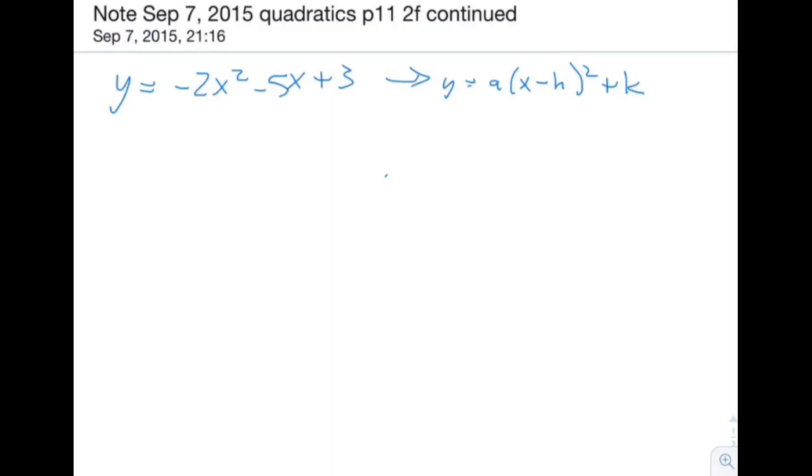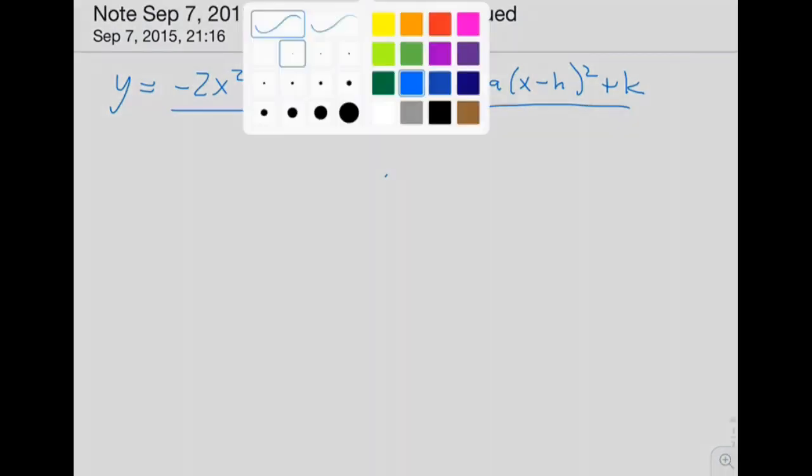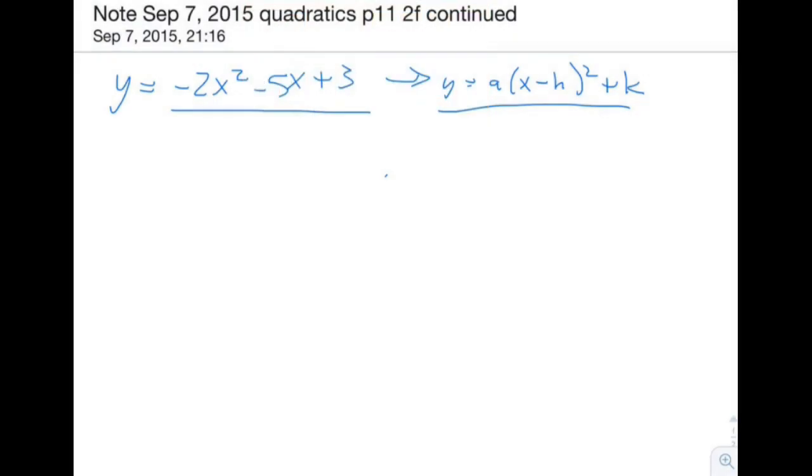In the last video, I promised that I would do this conversion from standard form ax² + bx + c into vertex form using another method. The other method I was going to use is completing the square, and this is kind of a messy one to do completing the square on, but if you want to see a messy one, watch on.